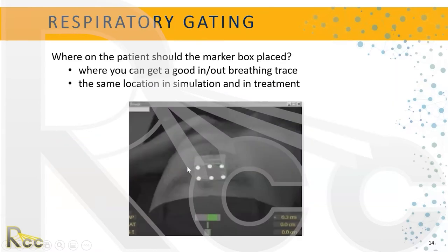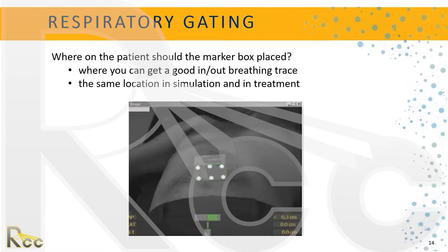Where should the marker box be placed? Here it's on the patient's abdomen. It's a small, lightweight plastic box with six reflector dots on one side — you have to place it so those dots are facing the camera, otherwise you won't get a good read and won't be able to trace the respiratory phases. It must be placed reproducibly every day, not hanging off to the side or placed randomly, and it must be in the same position every single day so the camera can see it and get a good breathing trace.